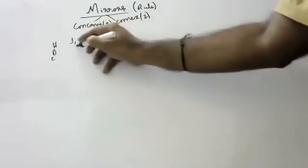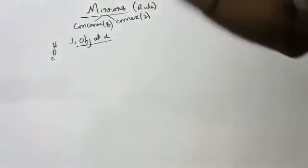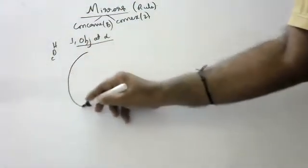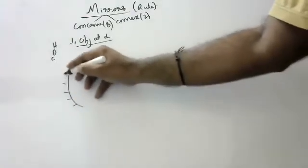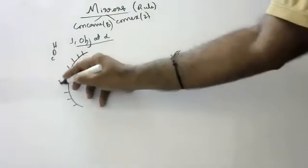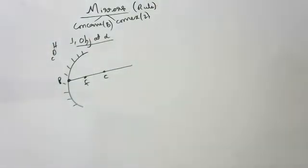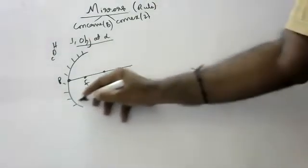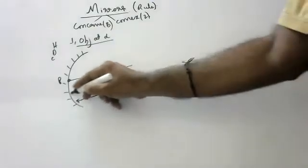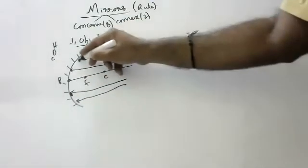This is a concave mirror. This is the pole, this is the focus, this is the center of curvature. Light rays are coming from infinity — they are all coming parallel to the principal axis.